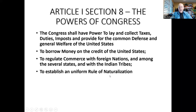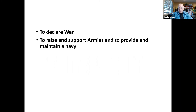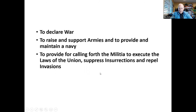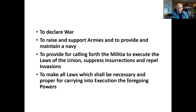Congress can establish rules for naturalizing citizens. Congress and only Congress has the power to coin money, establish post offices, declare war, raise and support armies and navy, and call forth militias to suppress insurrections. Most significantly, Section 8 ends by saying Congress shall make all laws which shall be necessary and proper for carrying into execution the foregoing powers — this is called the necessary and proper clause, also called the elastic clause, because it gives Congress lots of leeway.